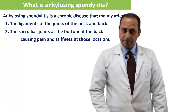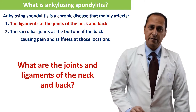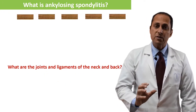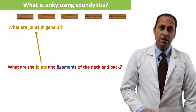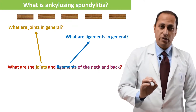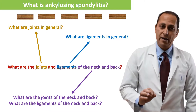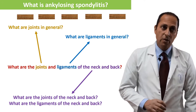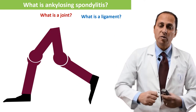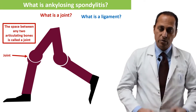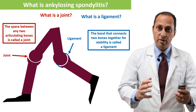Point number three: the ligaments of the joints of the neck and back. What are ligaments and joints of the neck and back? We will fragment this question into smaller pieces and build it up again. What is a joint? It's the space between any two articulating bones — the fulcrum at which movement occurs. A ligament is a band that connects two bones together for stability where there is a joint.